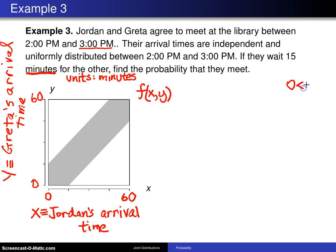We know already that the support will be x values between 0 and 60 and y values between 0 and 60. As a quick example, if x equals 45 and y equals 12, that is right there. And notice in this particular case, Jordan arrived at 2:45, Greta arrived at 2:12. And so in this particular case they arrived far enough apart that they didn't wind up meeting.